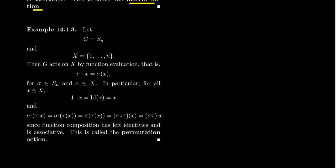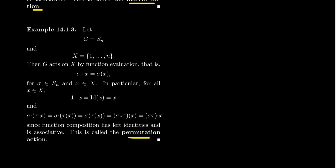We proved it for the general linear group; let's verify it for permutations. If we take the identity permutation — the identity function — evaluating it at x gives back x, so the identity permutation acts trivially on any element x. For compatibility: if we have two permutations sigma and tau acting upon x, tau acts first, giving the image of x via tau, and then sigma acts on that, giving sigma of tau of x. In composition notation, this is sigma∘tau evaluated at x. But sigma∘tau is exactly what permutation multiplication is defined to be, so compatibility is satisfied. This is known as the permutation action.